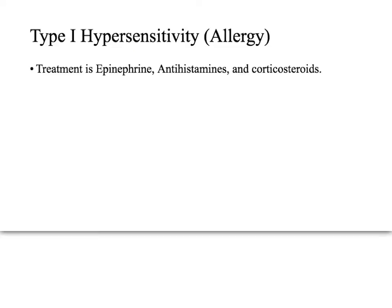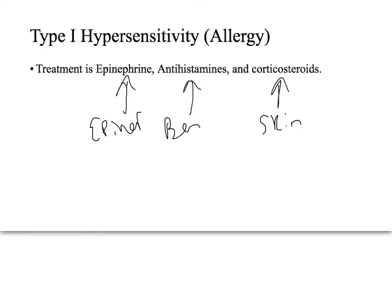The treatment for type 1 hypersensitivity is any of, or combination of, epinephrine, antihistamines, and corticosteroids. For an allergic skin rash, you put on cortisone. For hay fever allergies, you take Benadryl. For an allergic asthma attack or systemic reactions, you might use epinephrine.